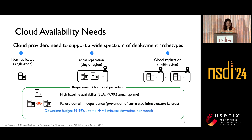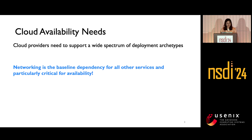To give you some sense of what we mean by four-nines availability, it really means about four minutes' downtime per month. This also means that if a human is involved in mitigations, it's highly likely we cannot meet that budget. Among all the factors, networking is a baseline dependency for all other services and is particularly important for availability.